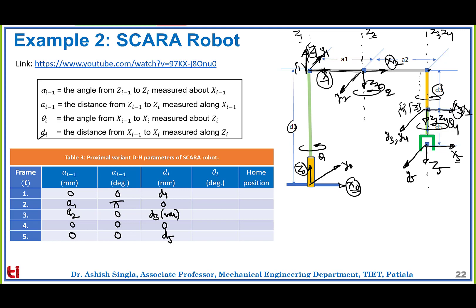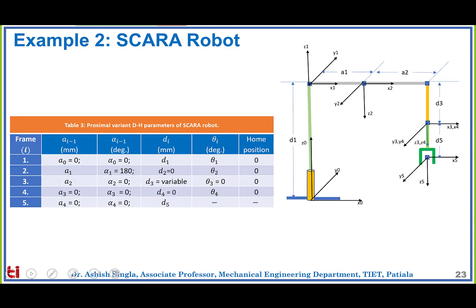The joint angle column: theta 1 is the first angle, theta 2 is the second, the third is a fixed value of 0 (prismatic joint), and theta 4 is the last variable angle. At the home position, theta 1 is the angle from X0 to X1 along Z1 which is 0. All subsequent X axes are in the same direction, so all angles are 0 at home position. This completes the DH parameter table for the SCARA robot.